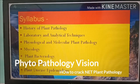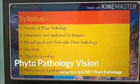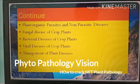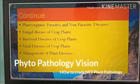The first unit is history of plant pathology. The second unit is laboratory and analytical techniques. The third unit is physiological and molecular plant pathology. The fourth unit is mycology and the fifth unit is plant bacteriology. The sixth unit is plant virology and the seventh unit is plant disease epidemiology. The next units cover phanerogamic parasites and non-parasitic diseases, fungal diseases of crop plants, bacterial diseases of crop plants, viral diseases of crop plants, and the last unit is management of plant diseases.